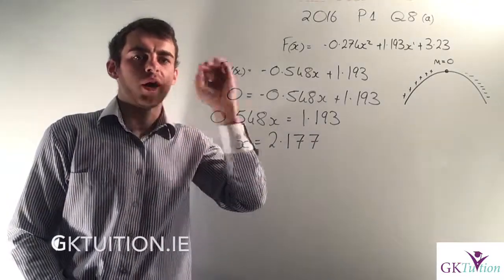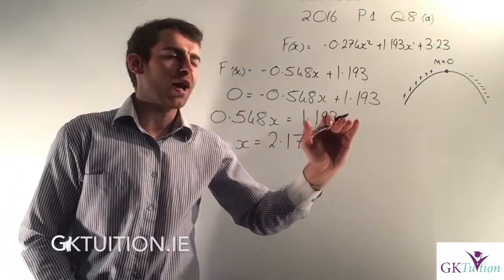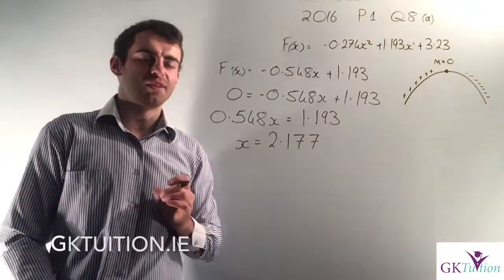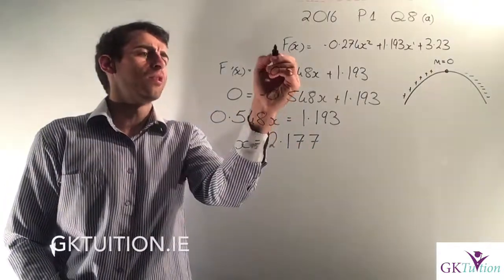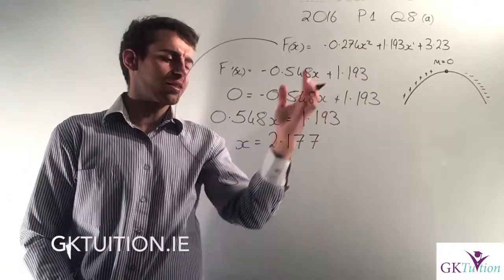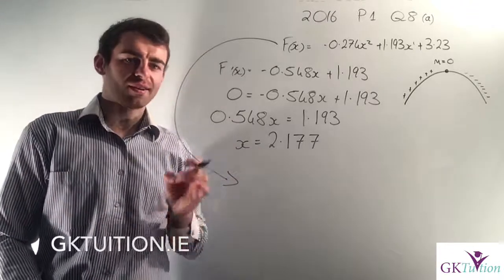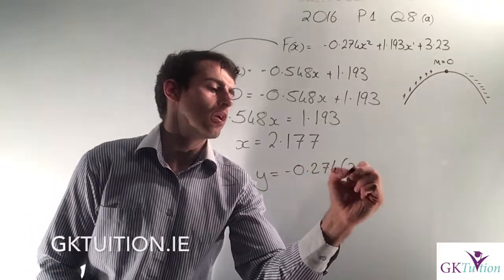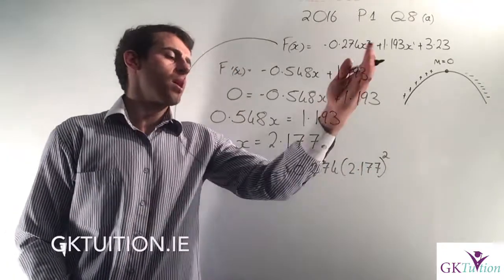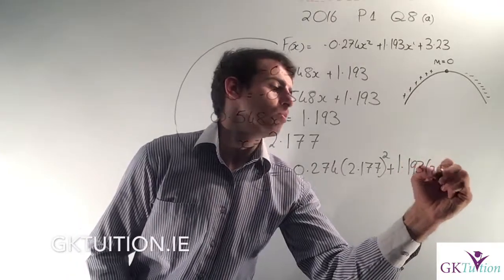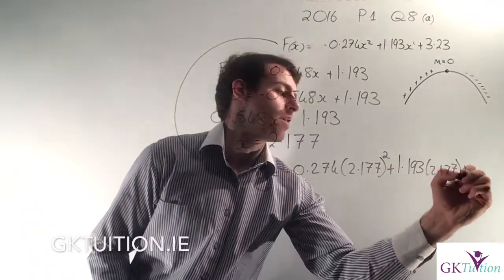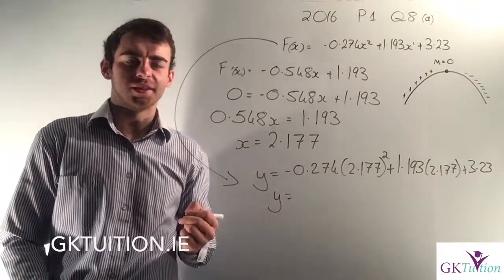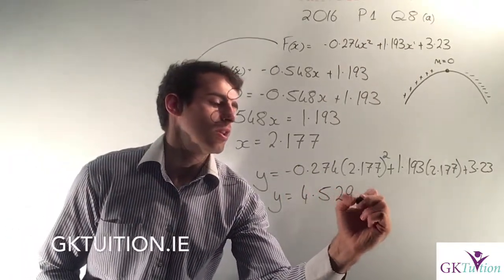But I was asked to find the maximum height, and x doesn't represent the height — in the graph what represents the height is y. So I need to find the corresponding y value when x is 2.177. I sub back into my original function, replacing every x with 2.177. So y equals minus 0.274 times 2.177 squared, plus 1.193 times 2.177, plus 3.23. Plugging all of that into my calculator, correct to three decimal places, the maximum height reached by the ball is 4.529 metres.